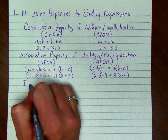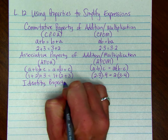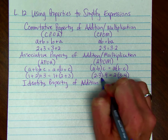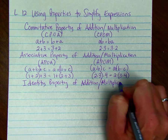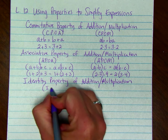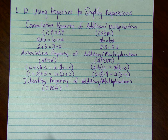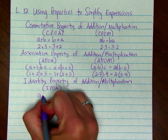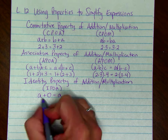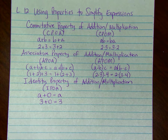The next property is called the identity property of addition and multiplication. We can call the identity property of addition IPOA. It says that if we take a number and add 0, that number keeps its identity, which is A. For example, if A were 3, we could just add 0 to keep the identity of 3.